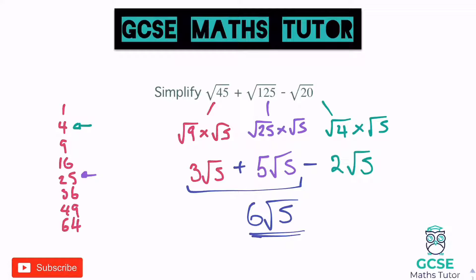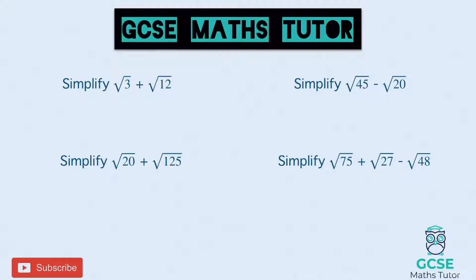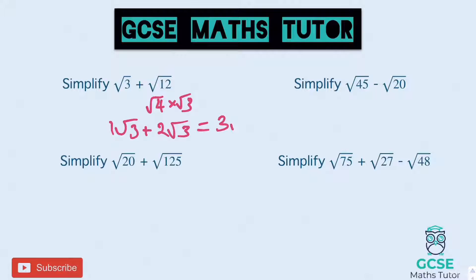You're going to try some questions now - I've only got a few for you. Go back and watch through that again if you're not sure, make notes, then here are four questions. Pause the video and have a go. First one: root 3 plus root 12. Root 3 doesn't simplify, but root 12 is root 4 times root 3, which is 2 root 3. So we've got 1 root 3 add 2 root 3, giving us 3 root 3 in total.